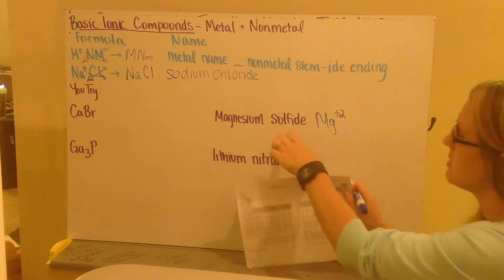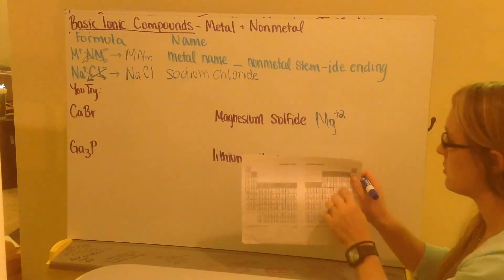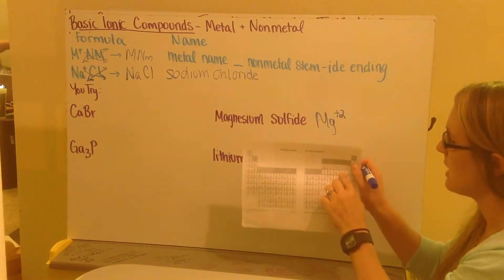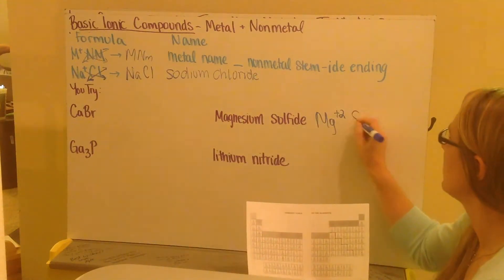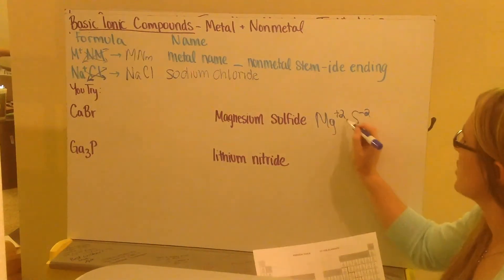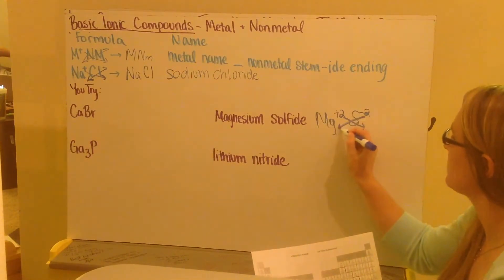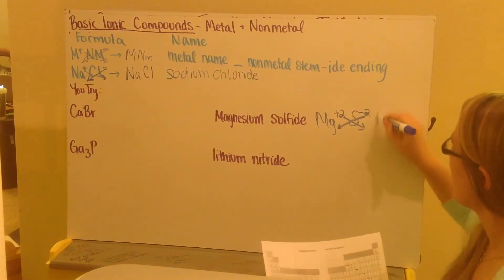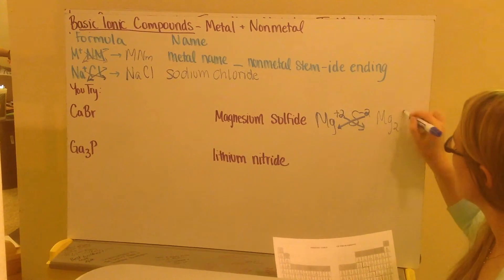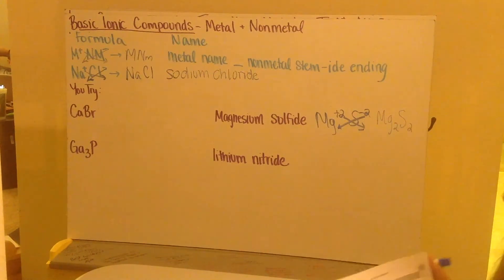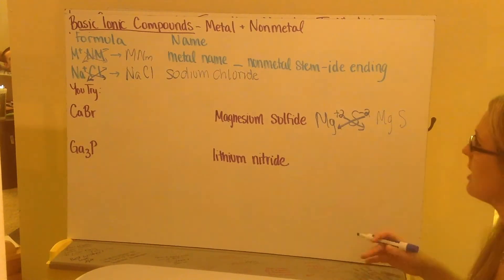Sulfide. Sulf is my stem. Comes from sulfur in group six. So it's going to have a charge of minus two. My charges criss-cross down, just the values. And I get Mg2S2. I need to reduce my subscripts. Both divisible by two. So I get Mg1S1. And we don't write our ones. So I just get MgS.